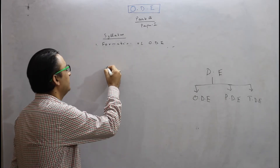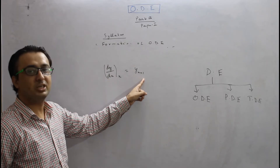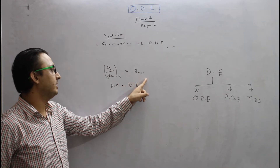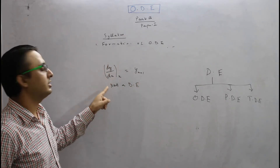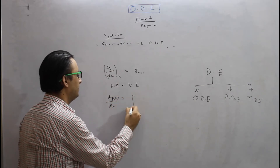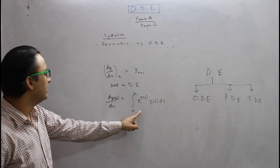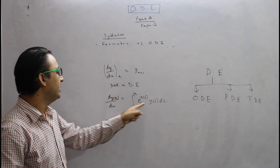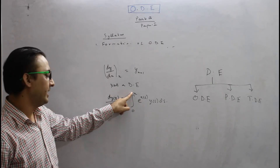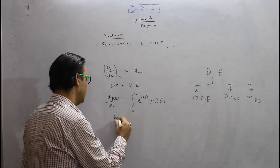If I write dy/dx at x = y(x + 1), is this a differential equation? No, it is not, because we are computing y at x + 1 while the derivative dy/dx is at x. Similarly, if someone writes dy/dx = ∫₀ˣ eˢ y(s) ds, this is also not a differential equation, because y is found within the integral on the right-hand side evaluated from 0 to x, while the derivative dy/dx is at x — so these are not differential equations.